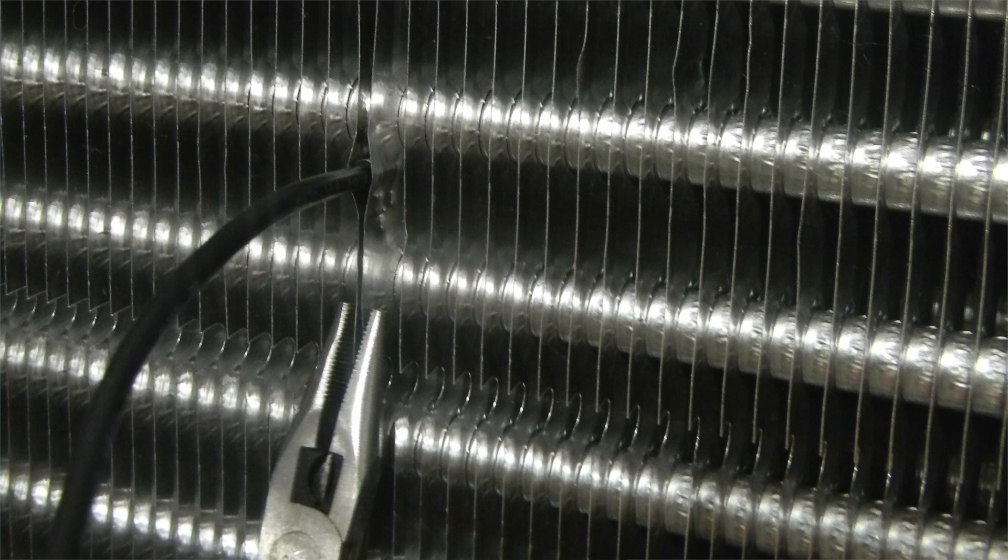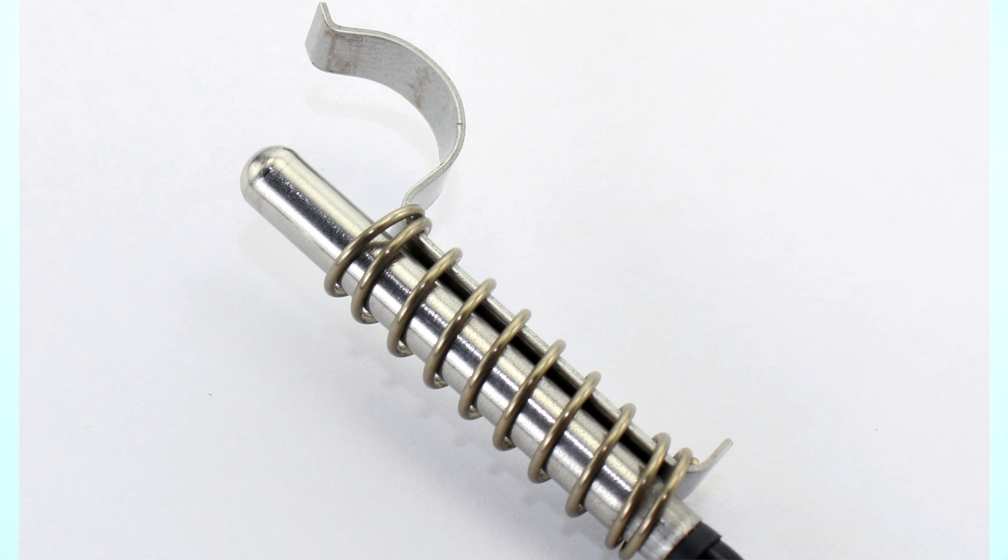When installing the sensor on an evaporator with 4 to 6 fins per inch, the fins themselves should be sufficient to hold the sensor in place. On installations with wider fin spacing, a coil sensor clip should be used. There are two methods that can be used to install the sensor.